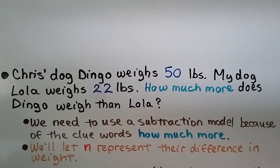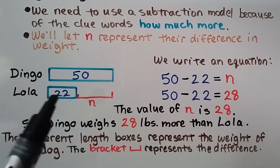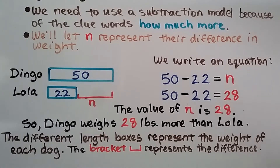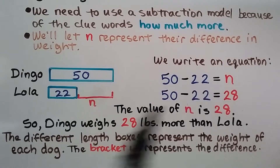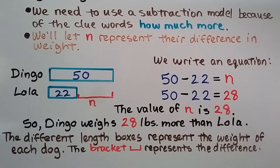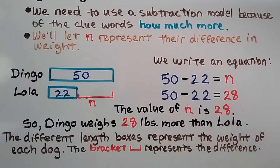Chris's dog Dingo weighs 50 pounds; my dog Lola weighs 22 pounds. How much more does Dingo weigh than Lola? We need to use a subtraction model because of the clue words 'how much more.' We'll let n represent their difference in weight. We make a box for Dingo's weight (50 pounds), a box for Lola's weight (22 pounds), and a bracket for n showing the difference. Our equation: 50 minus 22 equals n, so n equals 28. Dingo weighs 28 pounds more than Lola.